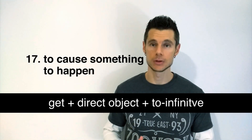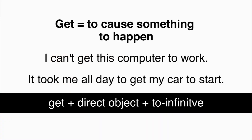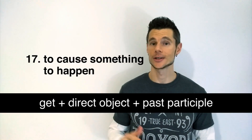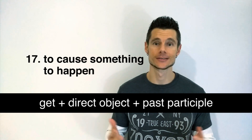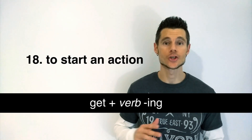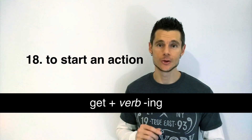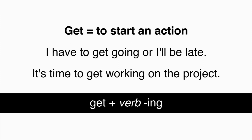The structure GET plus direct object plus to infinitive can also be used. I can't get this computer to work. It took me all day to get my car to start. The structure GET plus direct object plus past participle can also be used. She needs to get her homework finished. Let's get this party started. GET can mean to start an action. The structure used is GET plus verb-ing. I have to get going or I'll be late. It's time to get working on the project.